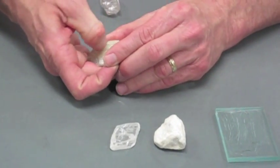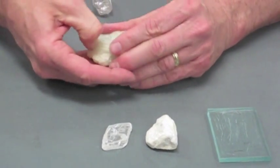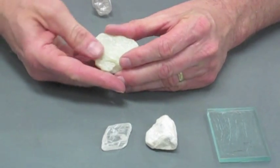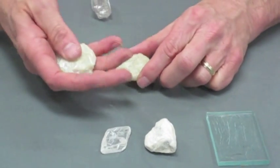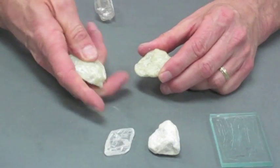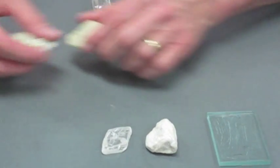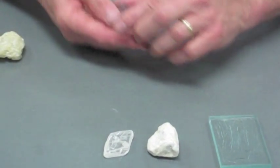You can see that you can scratch the talc with your fingernail, and it's soft too. It'll get scratches in it, but it has a really soapy luster, so that distinguishes it from gypsum. That's talc.